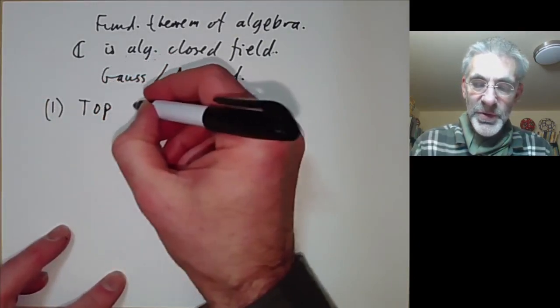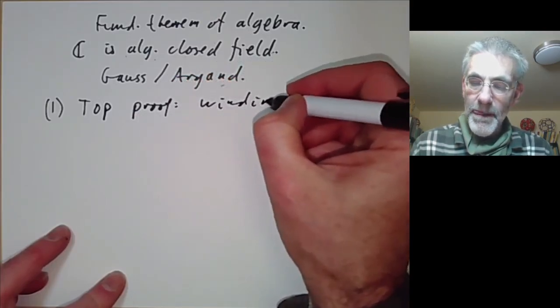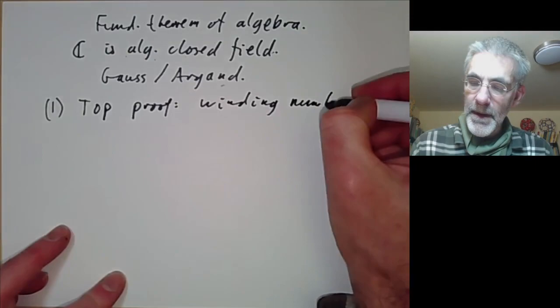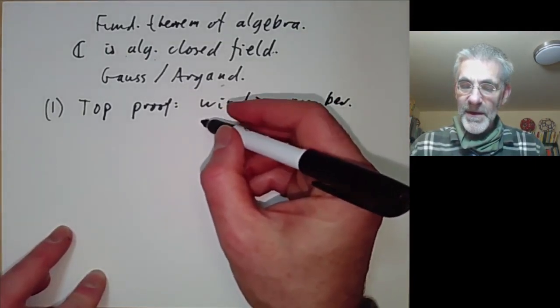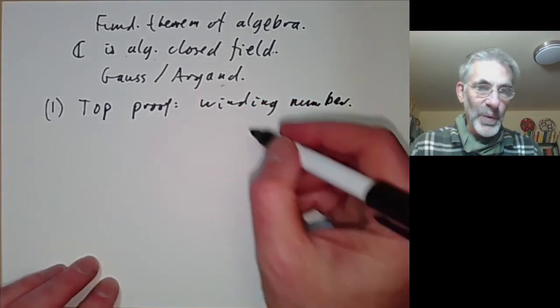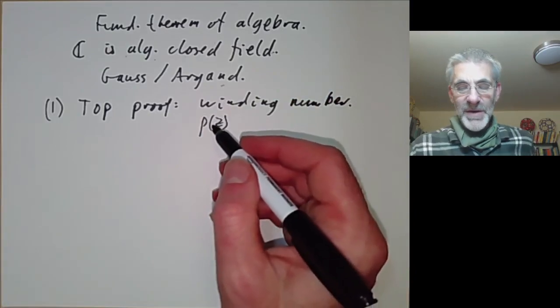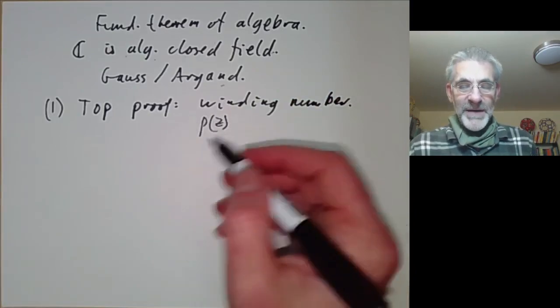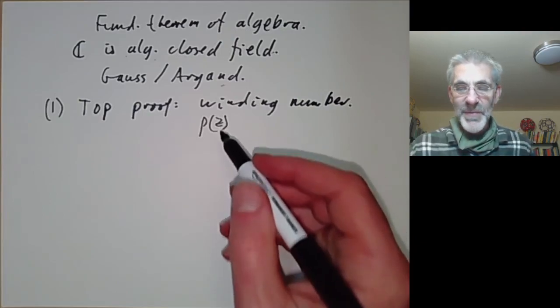First of all we have a topological proof involving the winding number. You remember we looked at a complex number z and made it go once around the origin and then we looked at p of z for a polynomial and saw that p of z winds n times around the origin and were able to deduce from that that p has a root.